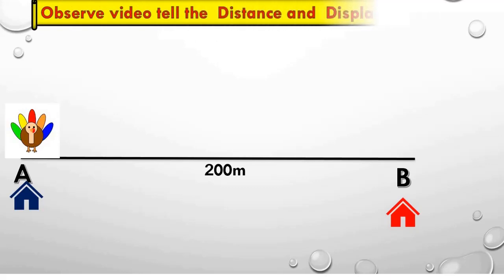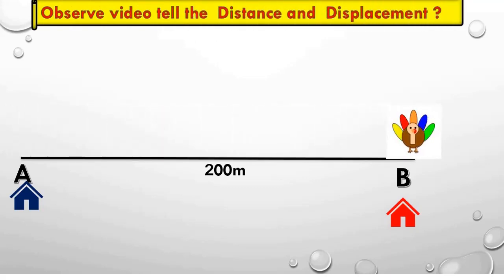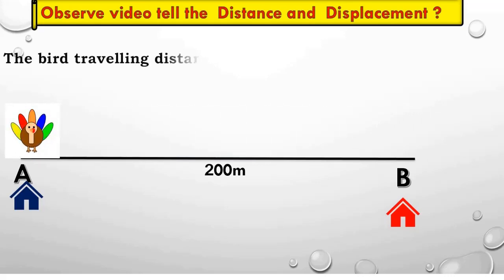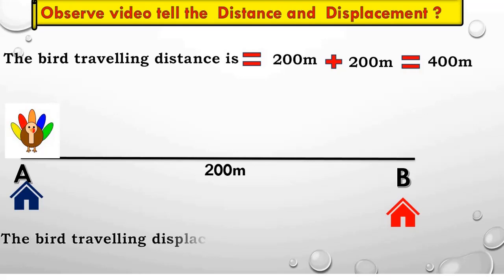Observe the video, tell the distance and displacement. The bird traveled distance is 200 meters, again 200 meters, total 400 meters. But the bird's traveling displacement is zero.